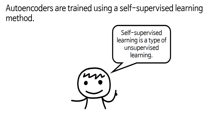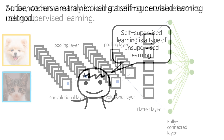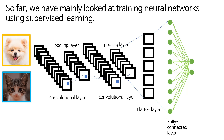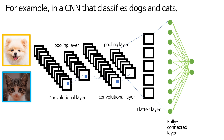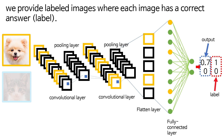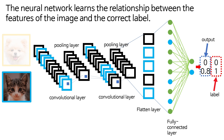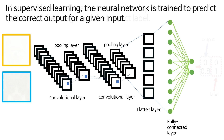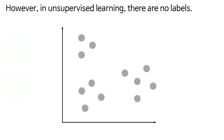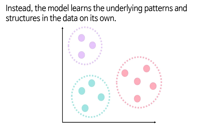Autoencoders are trained using a self-supervised learning method. Self-supervised learning is a type of unsupervised learning. So far, we have mainly looked at training neural networks using supervised learning. For example, in a CNN that classifies dogs and cats, we provide labeled images where each image has a correct answer. The neural network learns the relationship between the features of the image and the correct label. In supervised learning, the network is trained to predict the correct output for a given input. However, in unsupervised learning, there are no labels. Instead, the model learns the underlying patterns and structures in the data on its own.